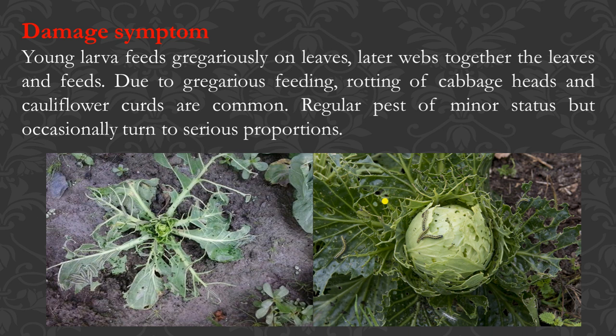Damaging symptoms: young larvae feed gregariously on leaves, later webbing the leaves together and feeding. Due to gregarious feeding, rotting of cabbage head and cauliflower curds is common. It is a regular pest of minor status, but occasionally under favorable conditions its population increases greatly and it emerges as a major pest.